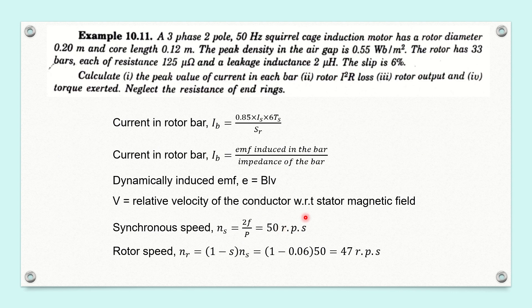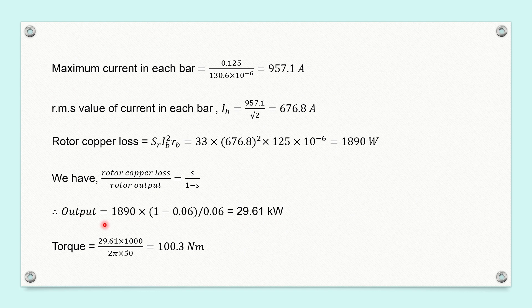As the last part, we have to calculate the torque exerted. We use the relation P = ωT, so torque T = P ÷ ω = 29,610 ÷ (2π × 50) = 100.3 newton meter. This is the torque exerted by the rotor. We have now calculated all the required parameters.